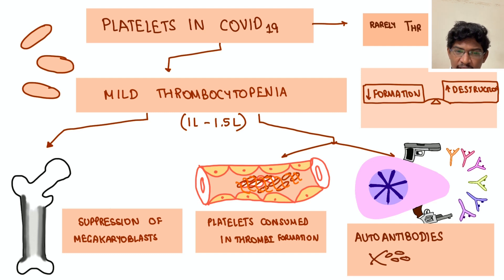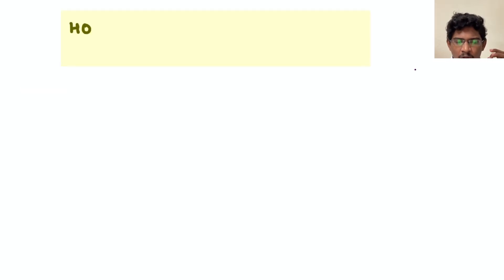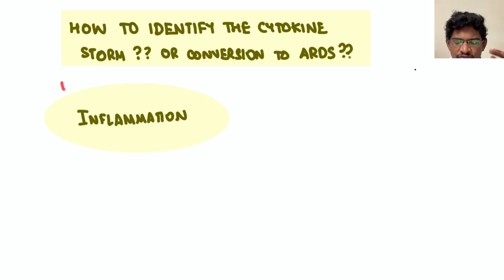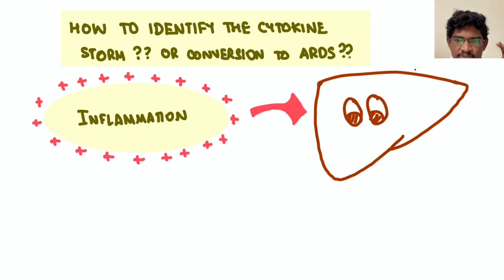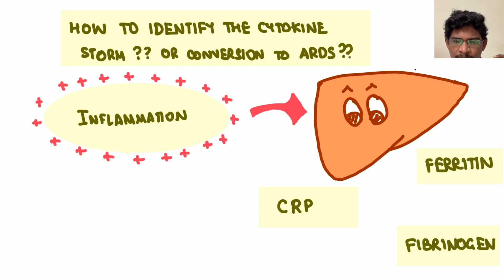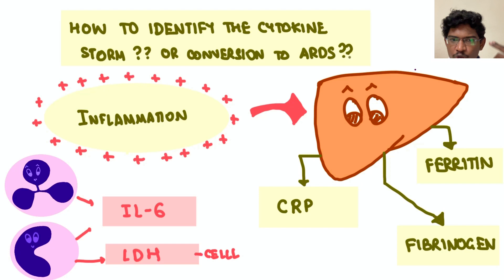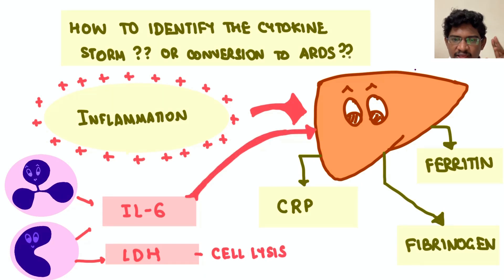How to identify when a patient will be progressing into cytokine storm or ARDS? Whenever severe inflammation happens in COVID, it stimulates the liver to produce acute phase reactants — ferritin, fibrinogen, and C-reactive protein. The inflammatory cells also secrete lots of cytokines, mainly interleukin-6, which further stimulates the liver to produce more acute phase reactants. So all of these are the inflammatory markers.